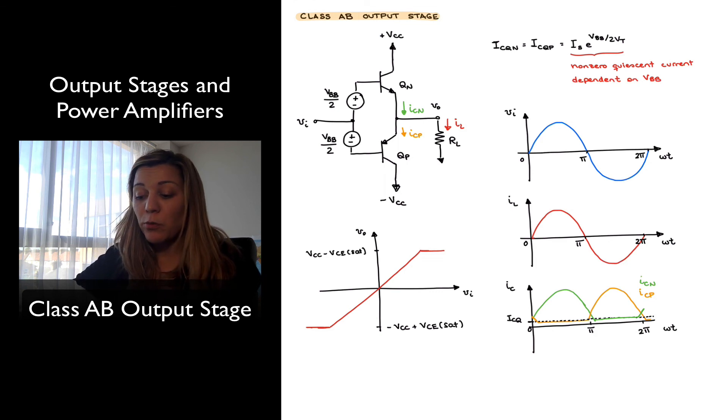Now, we need to find practical ways of implementing that additional biasing at the bases of transistors QN and QP. And there are different ways of implementing such biasing scheme.